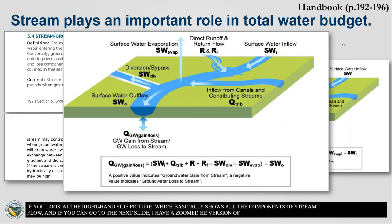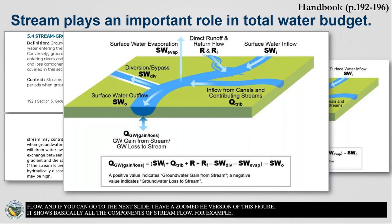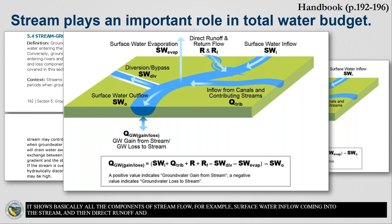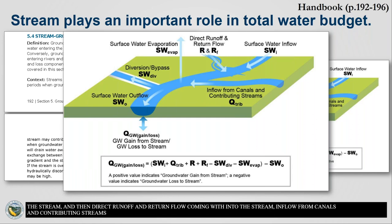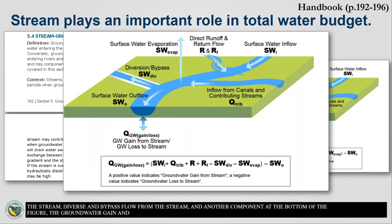The figure shows all the components of stream flow: surface inflow coming into the stream, direct runoff and return flow coming into the stream, and inflow from canals and other tributary streams. Outflows include surface evaporation from the stream, diversion and bypass flow from the stream. Another component at the bottom of the figure is the groundwater gain and loss, because this could be an inflow or an outflow depending on the connection between the stream and the groundwater.